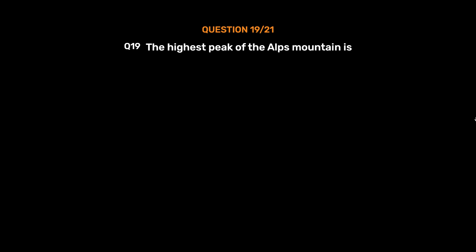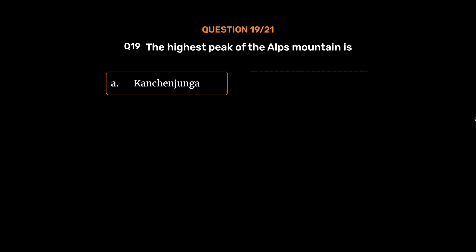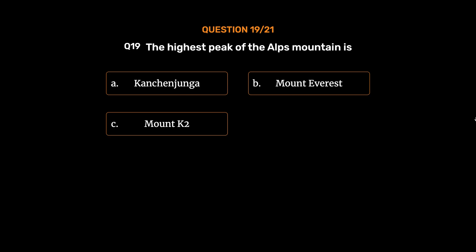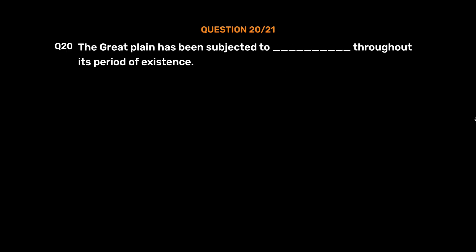Question number 19: The highest peak of the Alps mountain is — Option A: Kanchenjunga. Option B: Mount Everest. Option C: Mount K2. Option D: Mont Blanc. The correct answer is Option D, Mont Blanc.